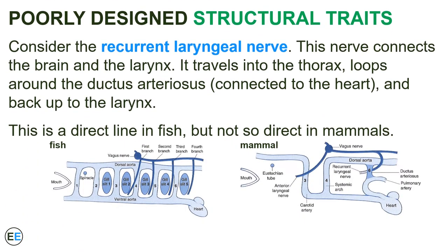Let's look at another famous example: the recurrent laryngeal nerve. This nerve connects the brain and the larynx, but it does so by way of the thorax, where it loops around the ductus arteriosus, which is connected to the heart, before traveling back to the larynx. If you look at the anatomy of the fish, as shown to the left, this is actually a fairly direct route. But it's not such a direct route in mammals, as shown on the right. What seems to have happened is that the gill arches in fish evolved to move down the body, thereby pulling the heart away from the larynx.